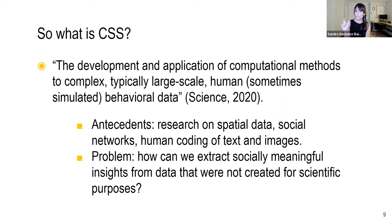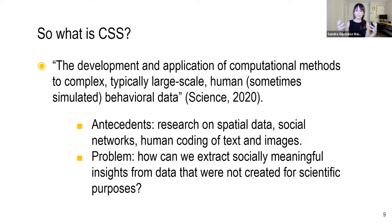The most important difference between computational social science and more traditional quantitative social science is that traditional quantitative social science makes assumptions of independence among observations, whereas computational social science deals with that complexity directly — with language, location, movement, networks, images, and videos — and applies statistical models designed to capture the many dependencies that exist within the data. One of the most salient problems CSS tries to solve is how to extract socially meaningful insights from data that were not created for scientific purposes.